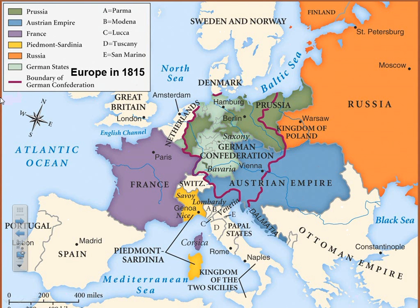This next map shows what the boundaries after the Napoleonic Empire will look like in Europe, starting in 1815. The bold magenta color represents the boundary of the German Confederation. All along we've seen in Europe the Holy Roman Empire, made up of various Germanic kingdoms and princes cobbled together, and now we're starting to see a step forward towards the making of the nation of Germany — but first, a confederation of German states being formed together. That's an important move in European history.